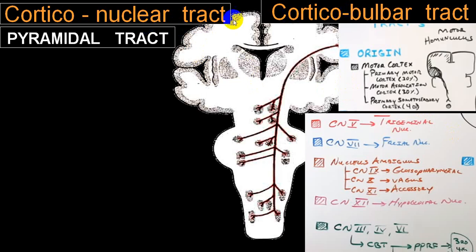The corticobulbar tract, also called the corticonuclear tract, is part of the pyramidal tract. To summarize, this pyramidal tract innervates almost all cranial nerves bilaterally — meaning the right side pyramidal tract will innervate both right and left cranial nerve nuclei. There are only two exceptions: the lower part of the face — the facial nerve nucleus — and the 12th cranial nerve, the hypoglossal, which are innervated by the opposite side pyramidal tract. So the right side lower face is innervated by the left pyramidal tract.